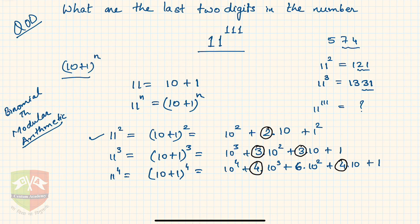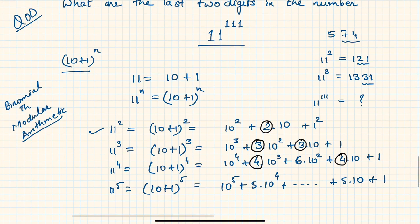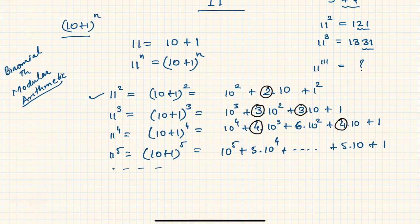So likewise if you just try to extrapolate, so 11 to the power 5 will be 10 plus 1 to the power 5 equals 10 to the power 5 plus, you know, the next term 5 into 10 to the power 4, plus whatever it is. These are all powers of 10. The second last term definitely will be 5 times 10 plus 1. Hence if you keep on doing this exercise...